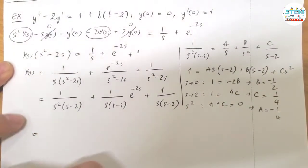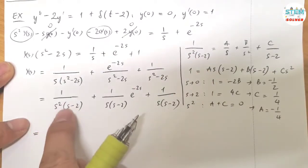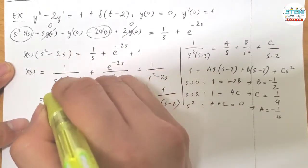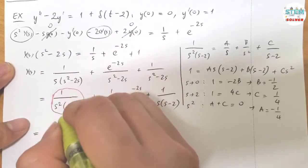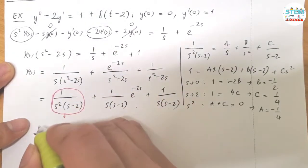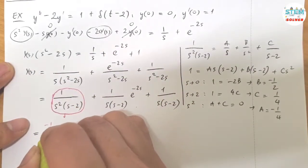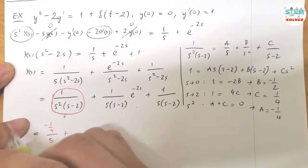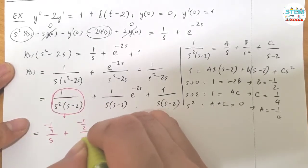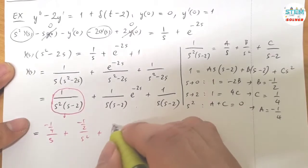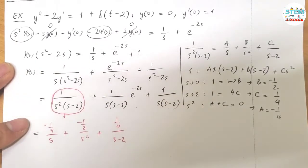Alright, now plug it back in. So this one becomes, this one becomes A which is negative 1 fourth over S plus B negative 1 half over S squared plus C 1 fourth over S minus 2.